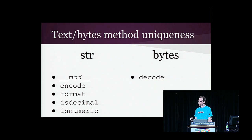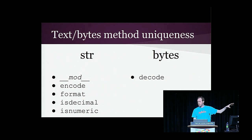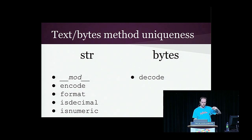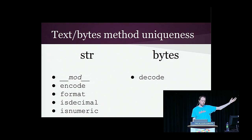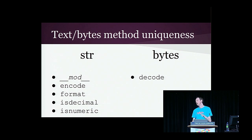In terms of where you'll have to make a clear separation and worry about API overlap, these are the unique methods on str versus bytes in Python 3. bytes has decode, but str does not. str has dunder mod (modulo — I'll talk about that in Python 3.5 in a moment), encode, format, isdecimal, and isnumeric — all unique to str in Python 3. So if you're dealing with binary data in Python 2, you can't use those. All other methods like maketrans do overlap, so you're safe to use those in Python 2 and have them work in Python 3.